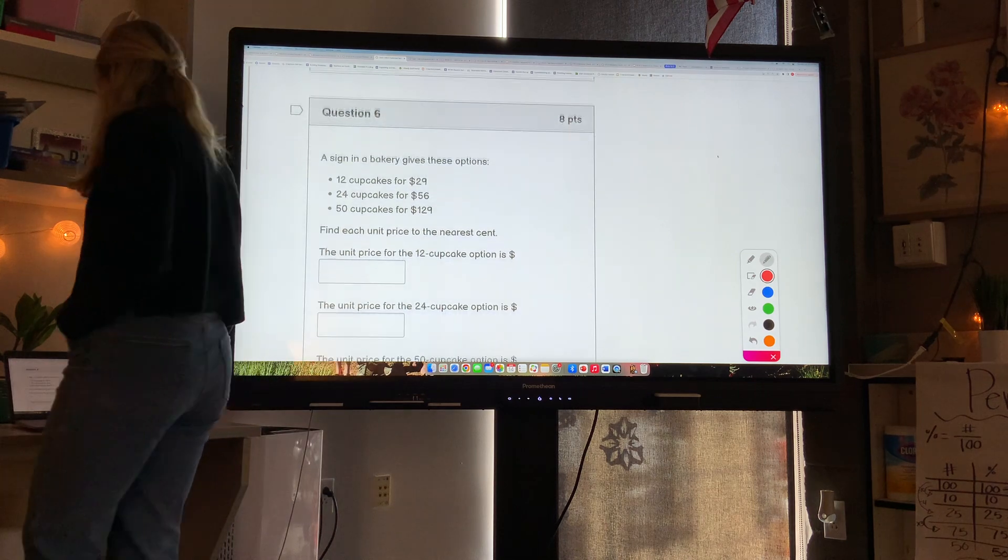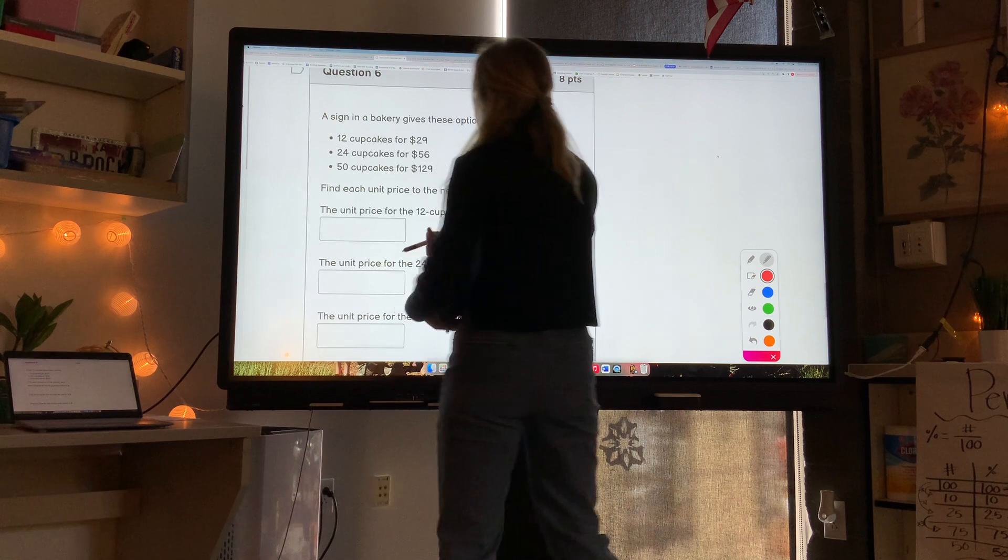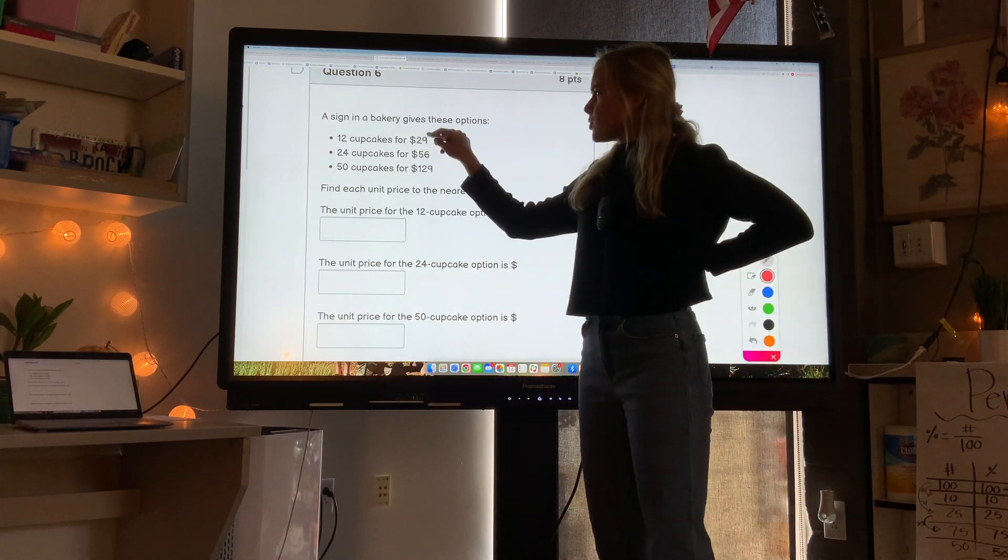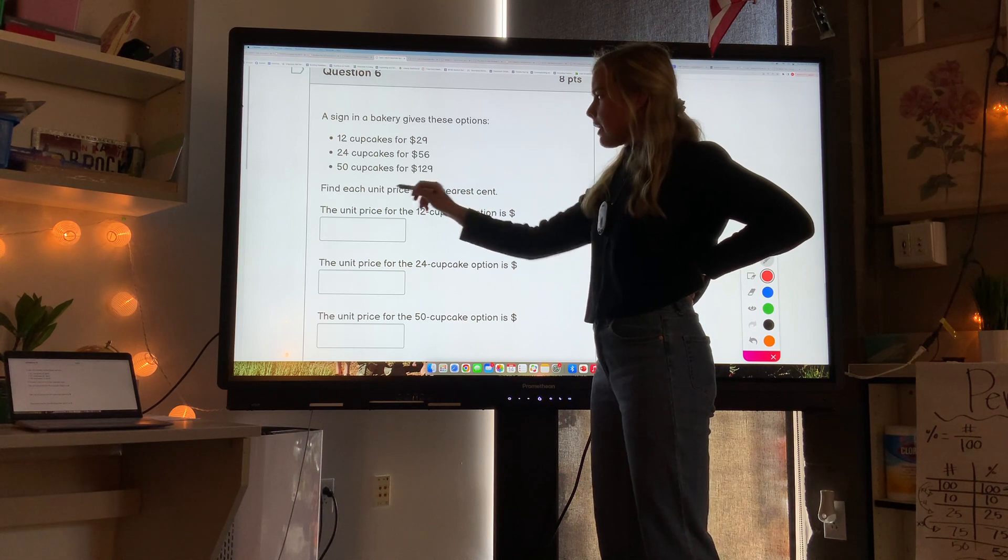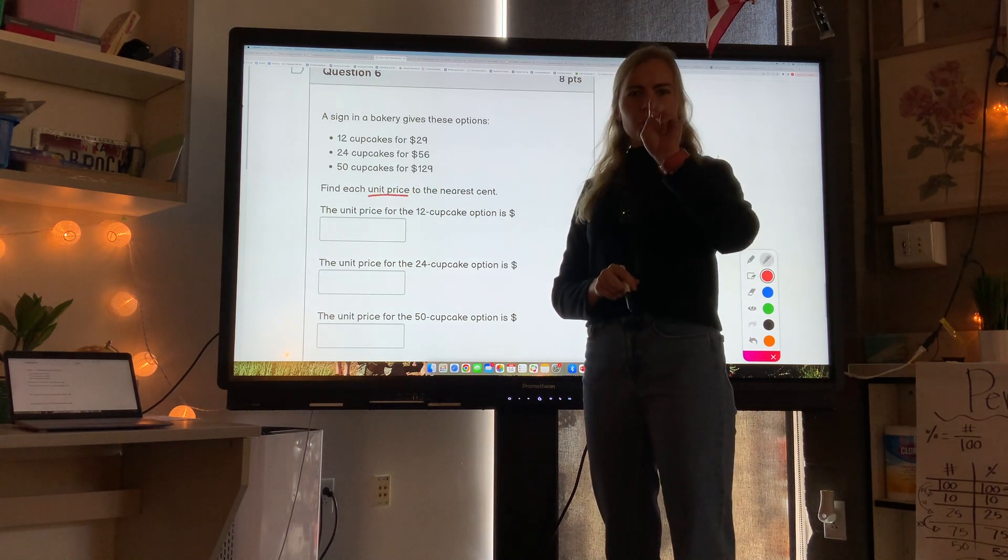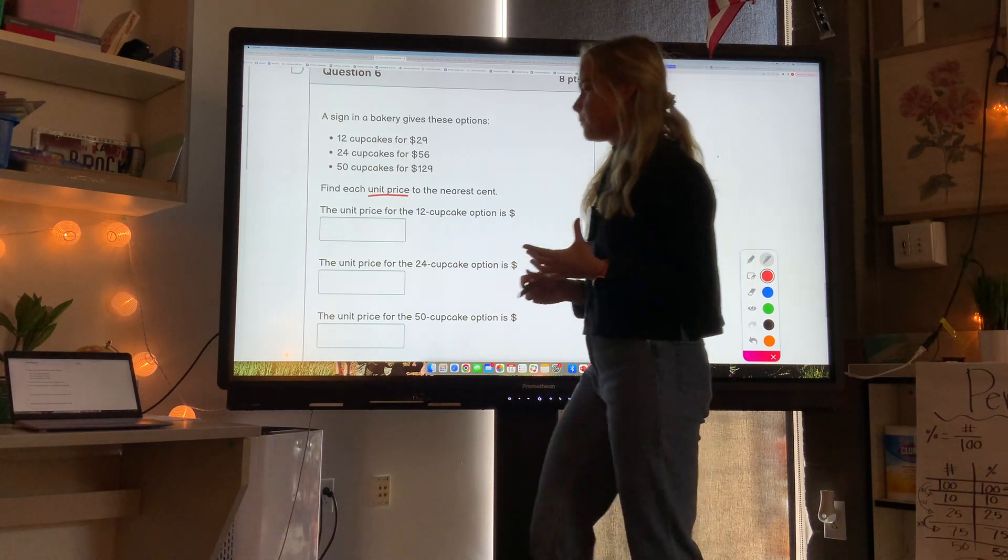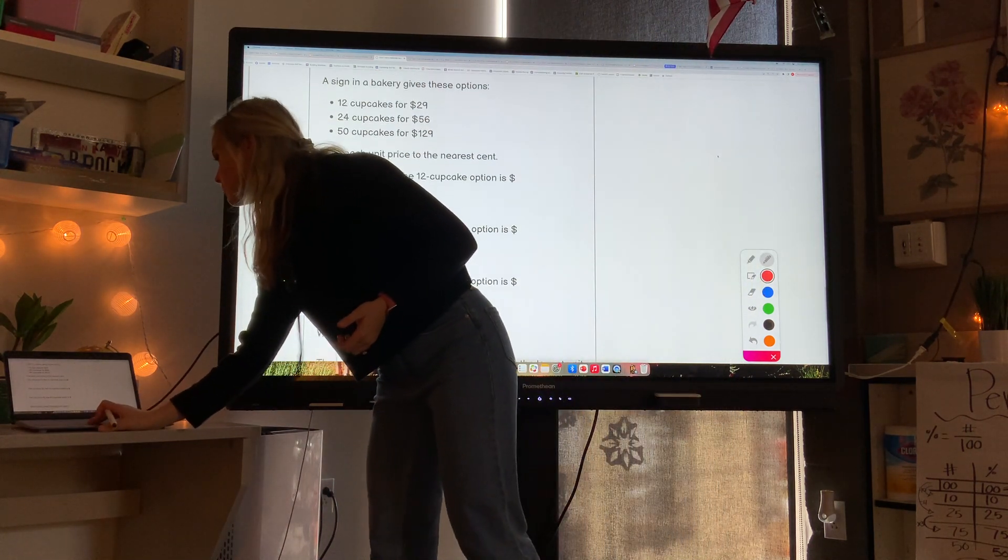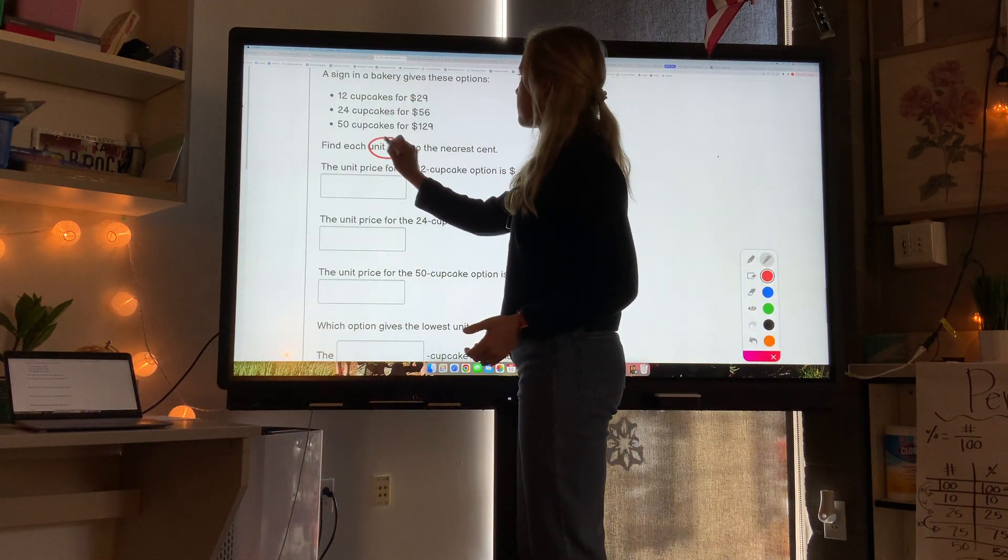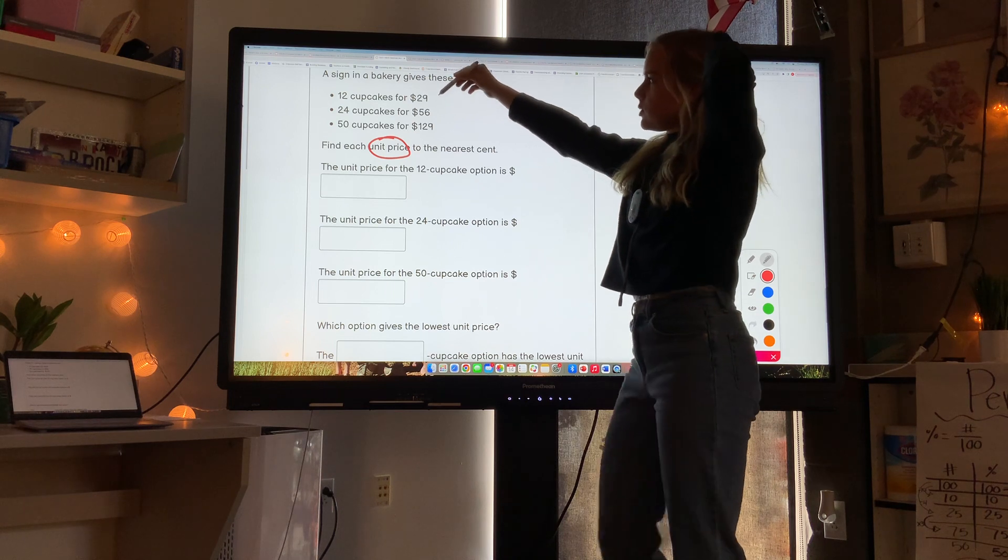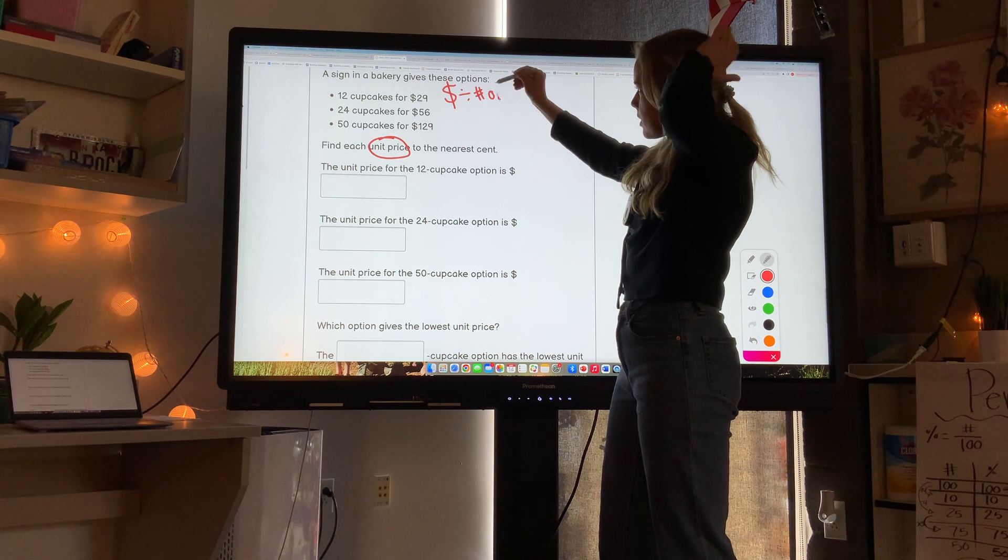Question 6. A sign in a bakery gives these options: 12 cupcakes for $29, 24 cupcakes for $56, and 50 cupcakes for $129. Find each unit price. So unit price is the price for one, and then we're going to see which one is the best deal. This is a multi-step question. So first I'm going to find the unit price of each of them. To find the unit price, you take the money and divide by the number of cupcakes. Always start with the money and divide by how many things you bought with the money.